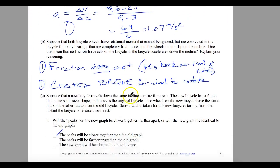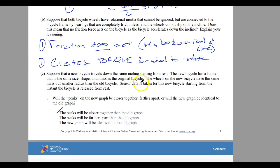For letter B, they say that suppose both bicycle wheels have rotational inertia that can't be ignored, but they're connected to bicycle frame by bearings. They're completely frictionless, and the wheels don't slip. Does this mean there's no friction force acting on the bike? Yeah, you have to have friction, and it has to be static friction between the road and the tire.